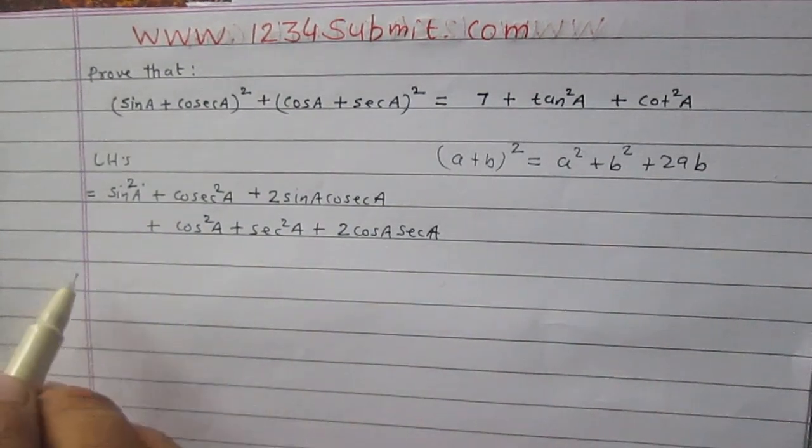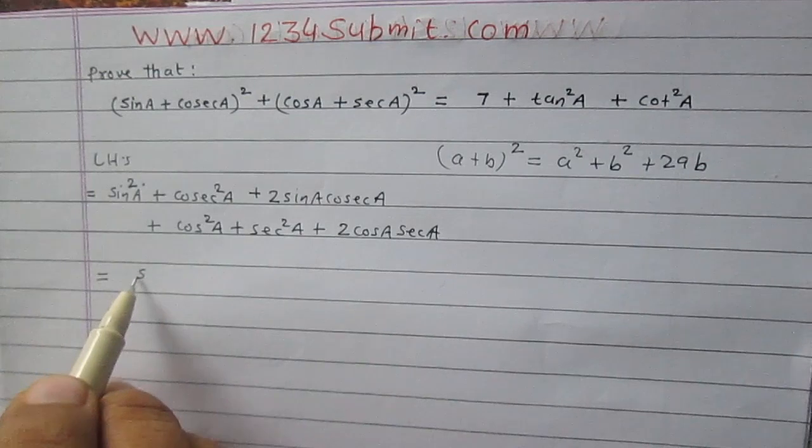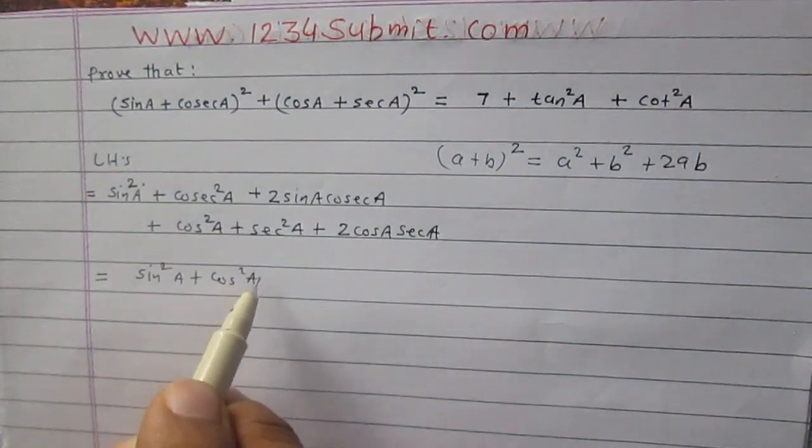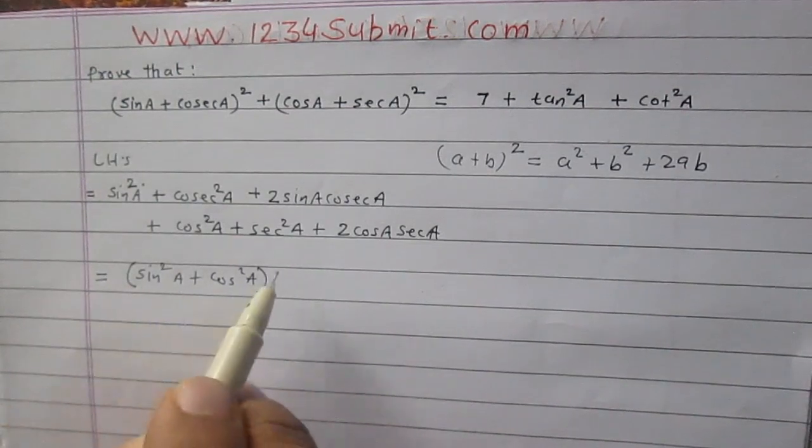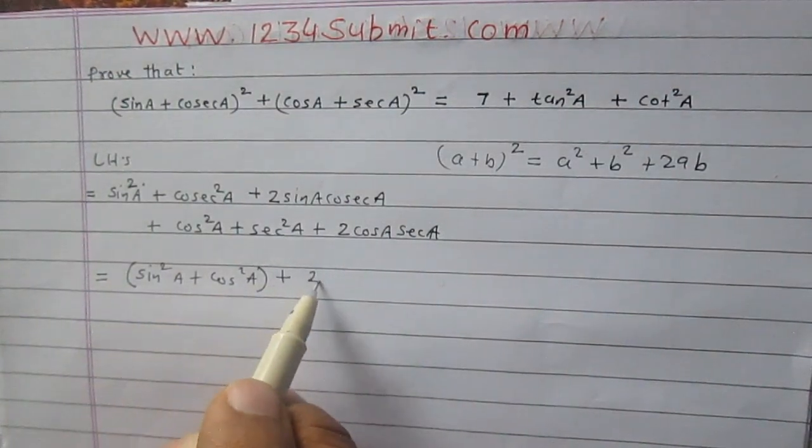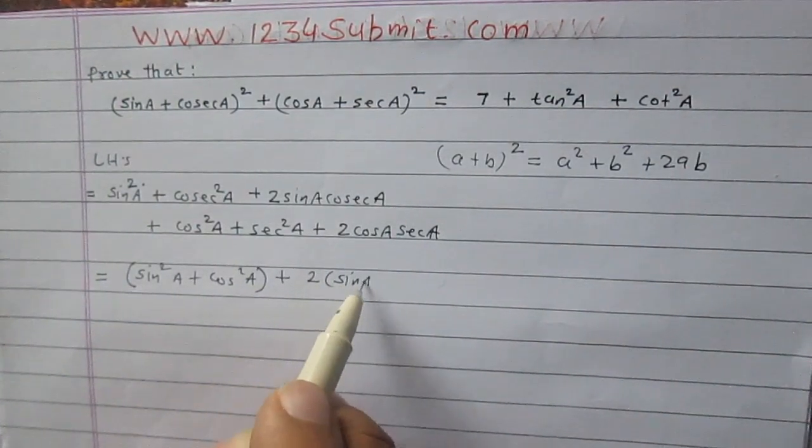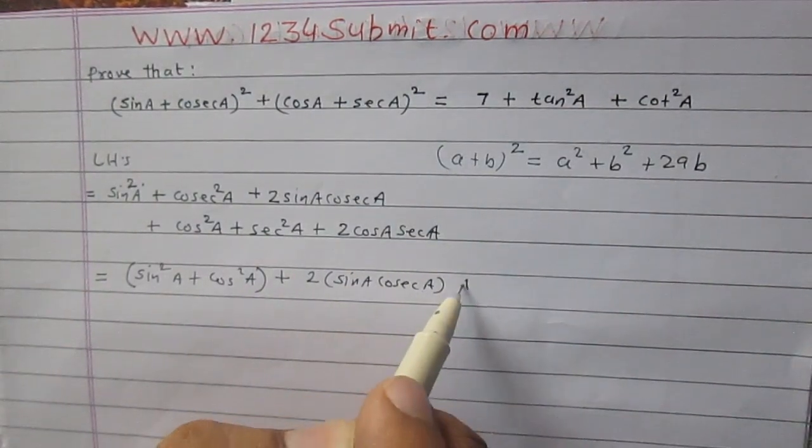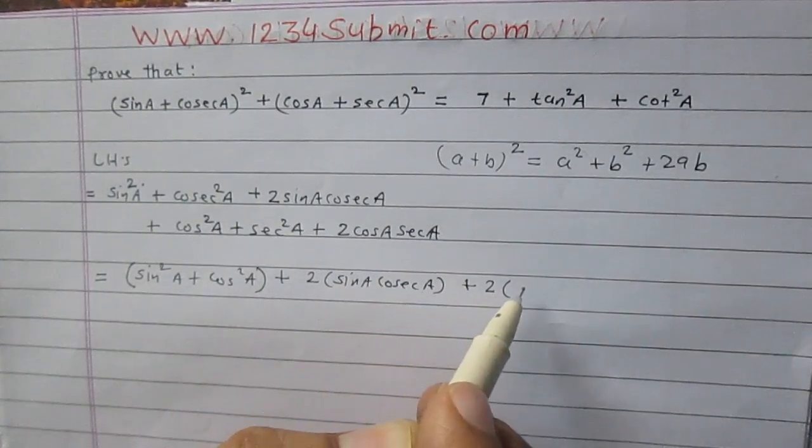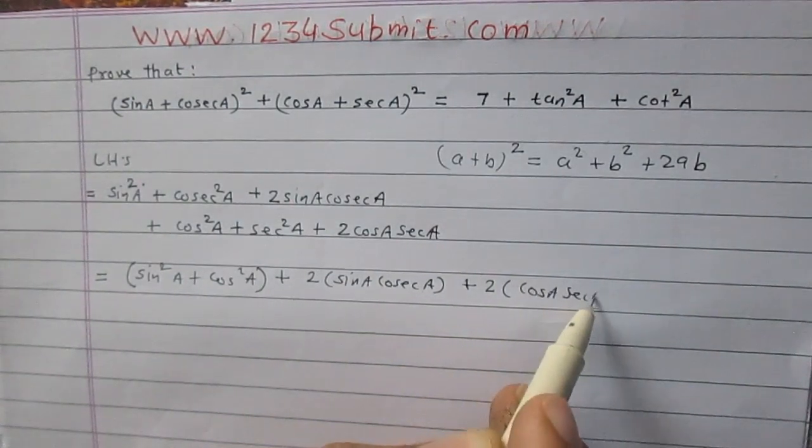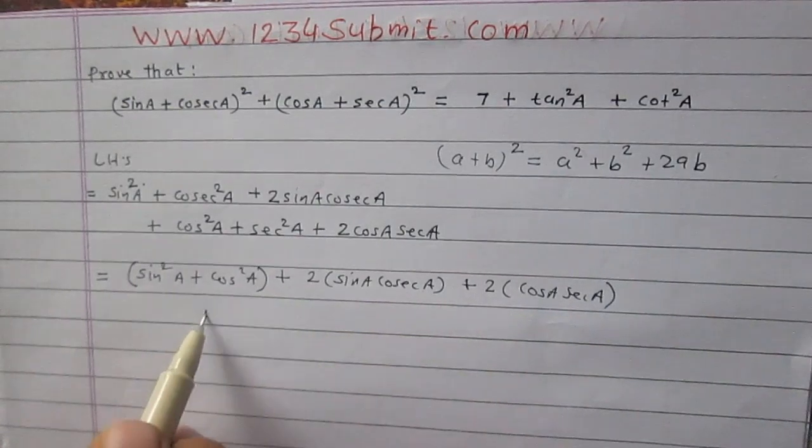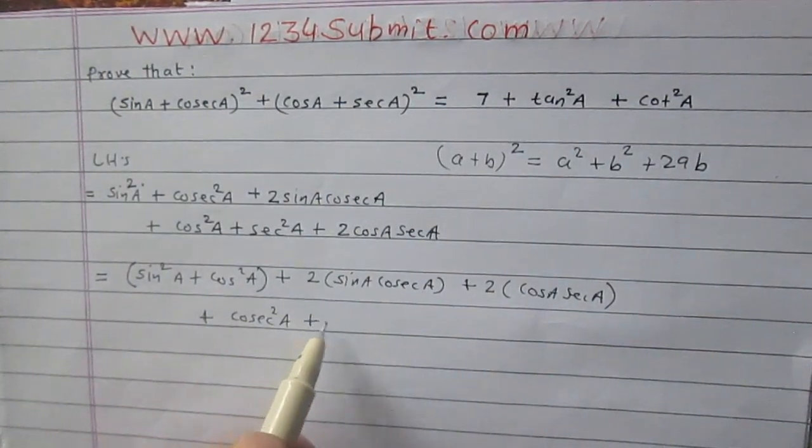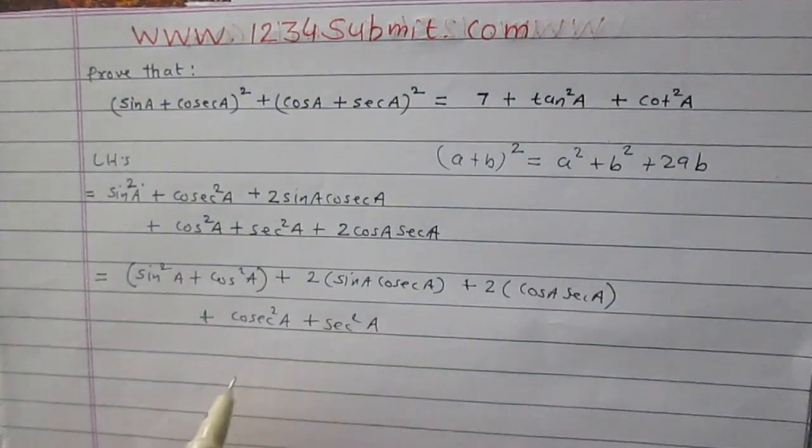Left hand side can be written once again as sin square a plus cos square a. I am writing these two terms together, then twice of sin a cosec a, then twice of cos a sec a, and the remaining terms are cosec square a plus sec square a.